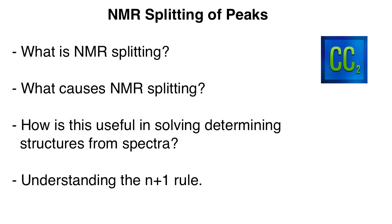Hey everyone, I wanted to address a common question about NMR that I haven't covered yet, even though I've done videos on other NMR material. That is the splitting of peaks — really understanding why, when we use proton NMR, we get peaks that split into doublets, triplets, quartets, multiplets, and things of that nature. You probably know the n+1 rule, but we're going to take a slightly deeper look and then backpedal so you understand why the n+1 rule exists.